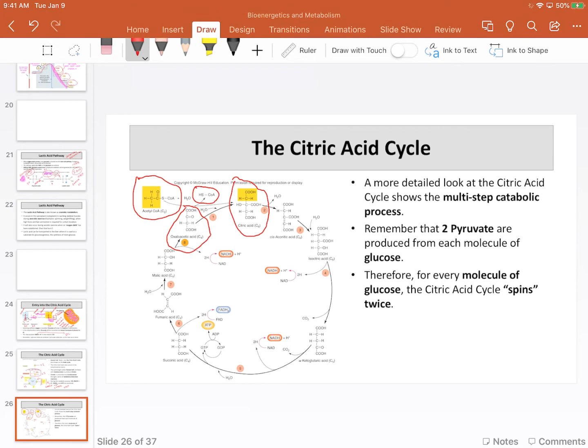As we continue through the cycle, I want you to look at step four really quickly. Again, don't worry about the names. But look here at my step four. This is the first step that we're going to use to produce my NADH. And that NADH will shuttle off, will move off into the electron transport chain. Of course, we've got the tagalong hydrogen there.